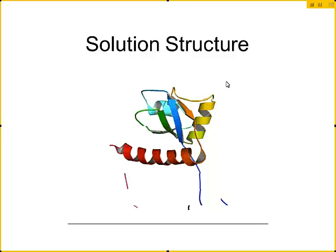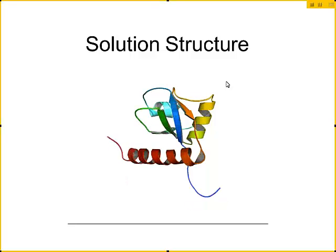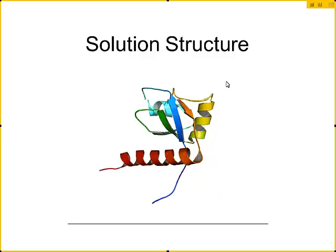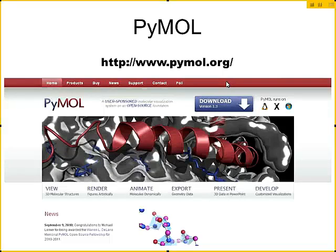If you look at all 20 structures, I made a little movie as I flipped through them so you can see the differences. The core of the protein is pretty well-determined and stable because of the restraints — that's a well-determined area. But the N and C termini ends are not restrained by contacts with the rest of the molecule, so you'll see that floppy behavior. With X-ray structures, these ends would qualify as missing atoms and would simply never be seen because the electron density is too spread out. Those are the issues with the solution structure.